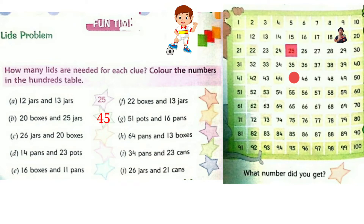Now see question C: 26 jars and 20 boxes. In the 1's place: 6 plus 0 is 6. And in the 10's place: 2 plus 2 is 4. So the answer is 46. Colour 46 in the 100's table.